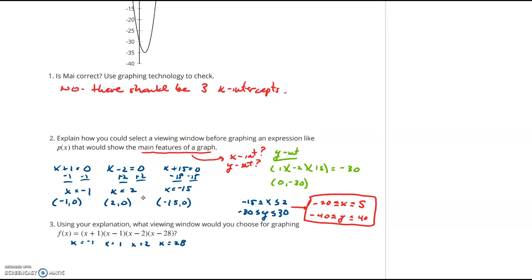Just looking at this, I can get a good idea of what my x window should look like. The smallest value is negative 1. We might want to go a little bit smaller than that, so negative 5. My largest x value is positive 28. We might want to go a little bit larger than that. So we will call that, let's go to 35.